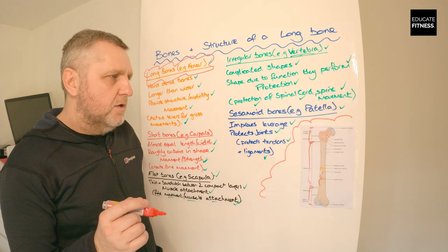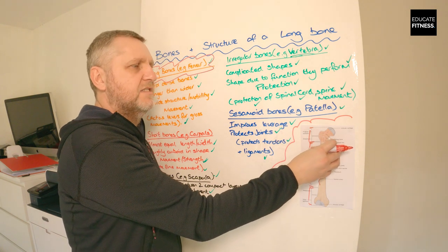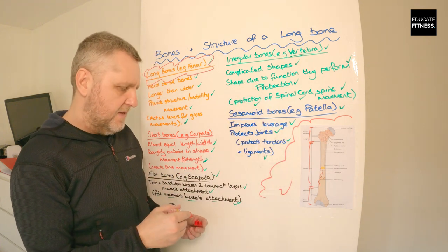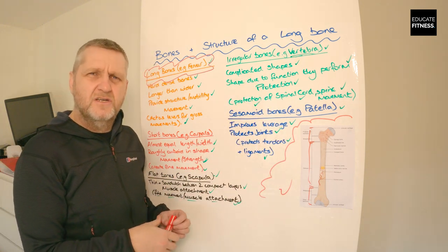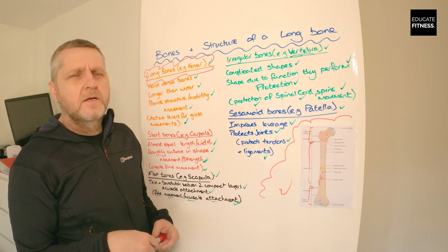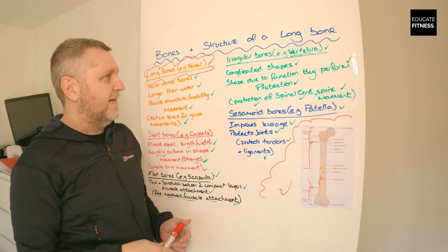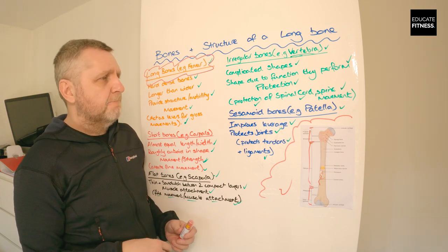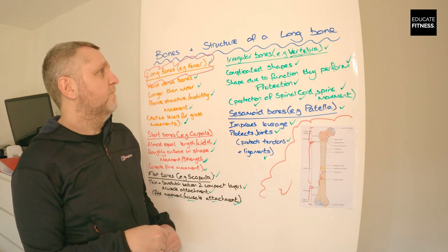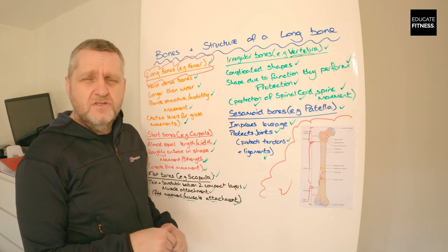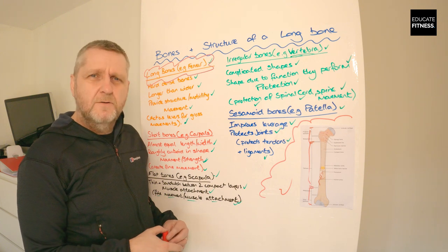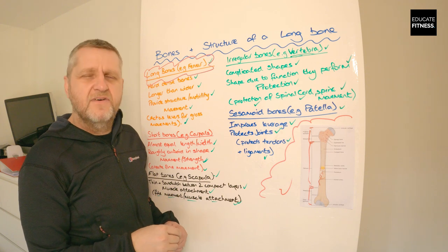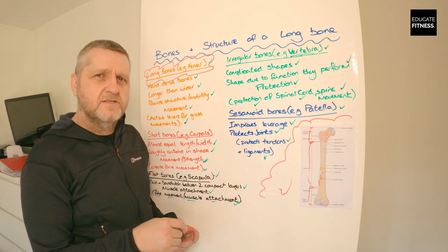My advice is to go through and understand the diagram of a long bone — it is an important part of the level 2 anatomy and physiology exam. You'll need to understand the five different types of bone: what they are and what their purpose is. If you have any questions or comments, please add them below, subscribe to the channel, and click the bell notification for new videos. Thanks for watching and I'll see you in the next one.